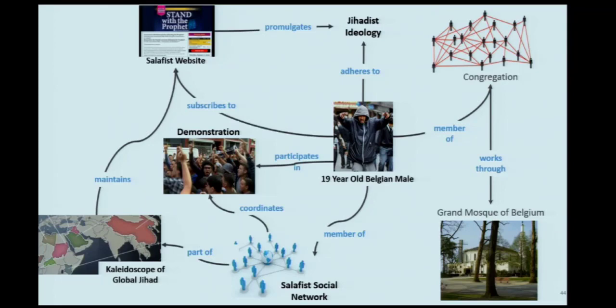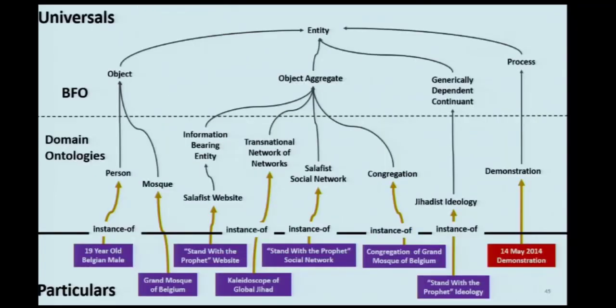My way of thinking would distinguish types from instances. Everything in the diagram is an instance, and the relations are between instances. The Belgian male is a person, which is an object. The Grand Mosque of Belgium is a mosque. The Stand with the Prophet website is a website. The kaleidoscope of global jihad is an instance of transnational network of networks. The Stand with the Prophet social network is an instance of Salafist social network. The ontology is everything above the solid horizontal line; everything below is instances.